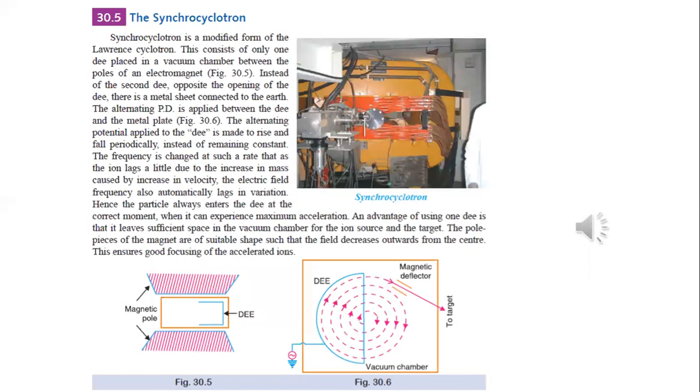The synchrocyclotron is a modified version of the cyclotron. By adjusting the frequency to match electron movement, the resonance condition is established and particles achieve maximum energy.